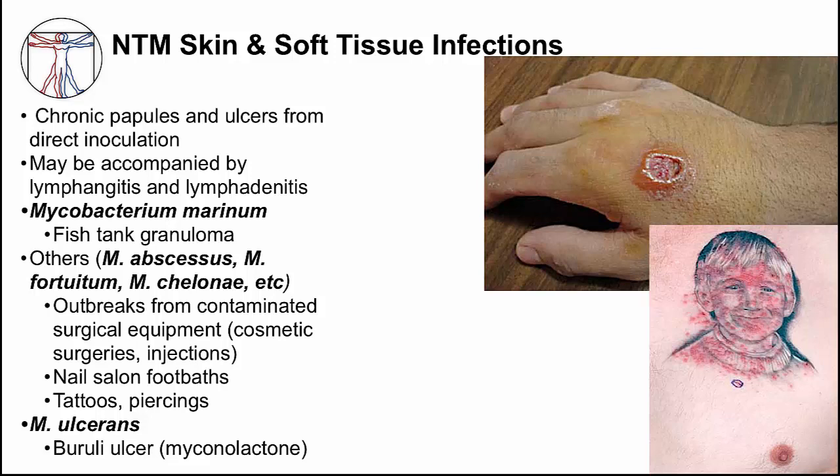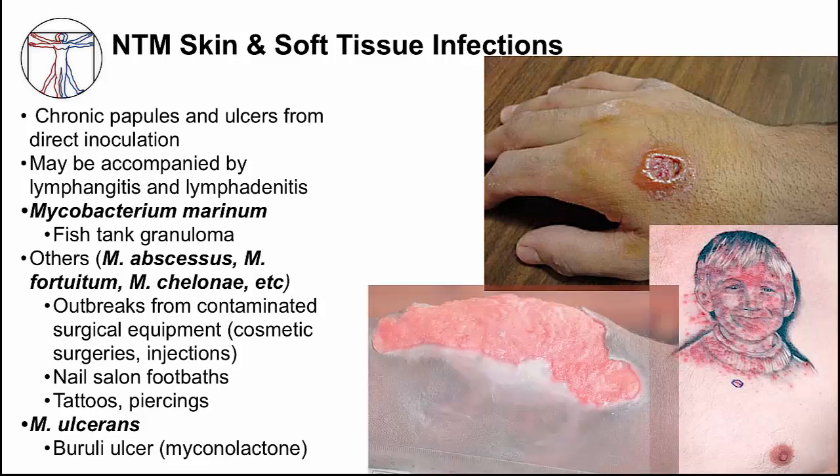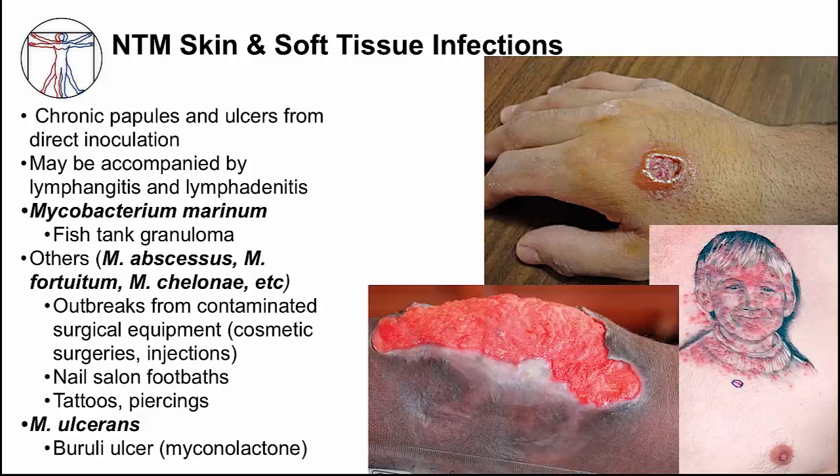Mycobacterium ulcerans causes a skin infection predominantly in sub-Saharan Africa, typically with water exposure. M. ulcerans produces a toxin that causes skin breakdown and local immune suppression. Without proper treatment, it can cause a severe chronic skin infection called Buruli ulcer.